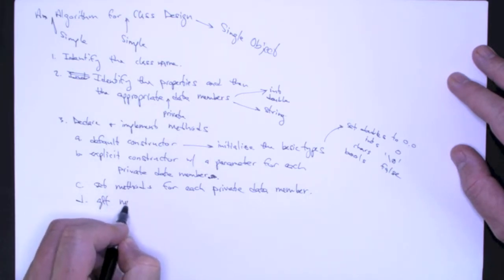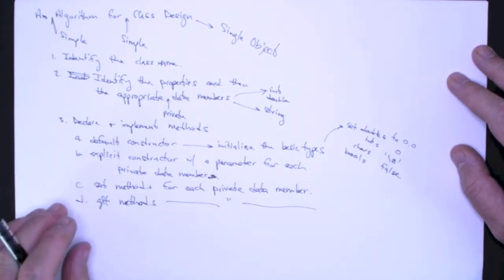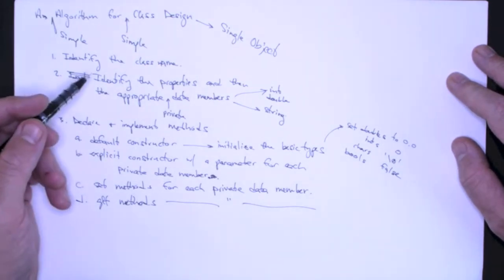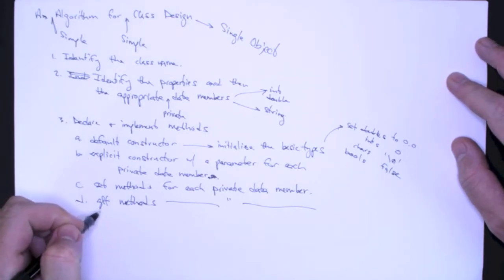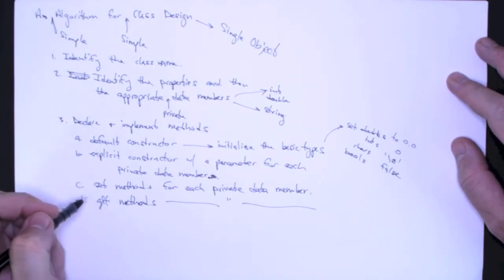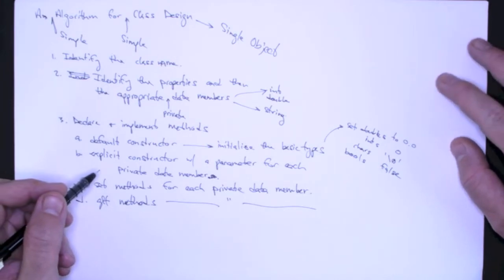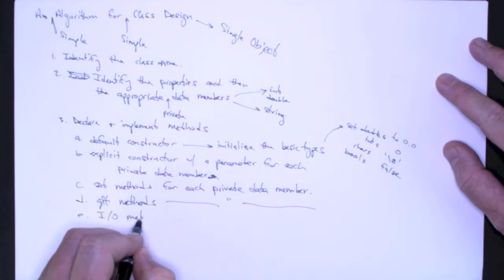Same thing for get methods. I want get methods for each private data member. And again, I want to be able to deal with the object as an object, but I also want to be able to retrieve individual attributes, individual properties, individual data members of an object. So I want to be able to get a person's name.